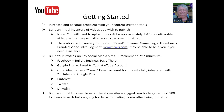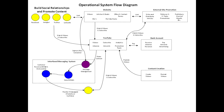I'm now looking at an operational system flow diagram which gives you an overview of the different parts of your new business. Going clockwise around this chart, at the top you want to build your social relationships and promote content. So here's where your Facebook, Google Plus, Twitter, LinkedIn, etc. come into play.